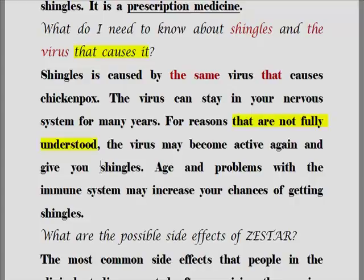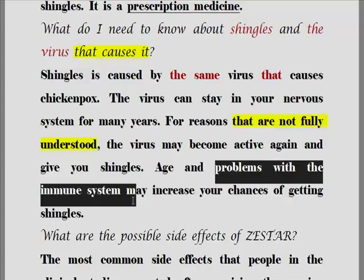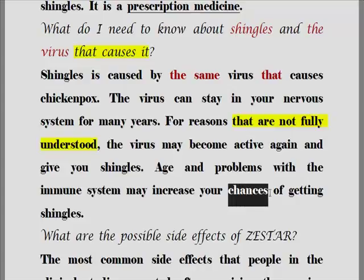Age and problems with the immune system may increase your chances of getting shingles. 나이, 그리고 problems with the immune system — 면역체계에 있어서의 문제점이 대상포진에 걸릴 수 있는 당신의 가능성을 늘릴 수도 있습니다.